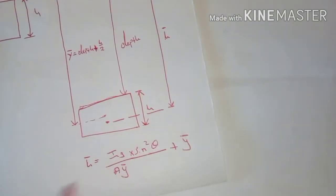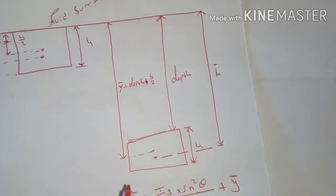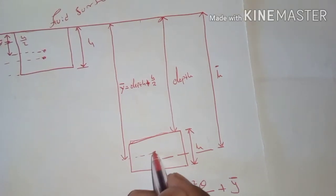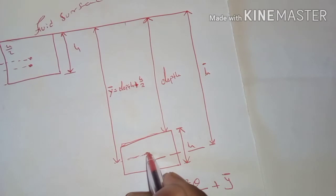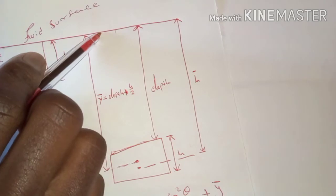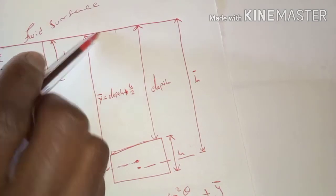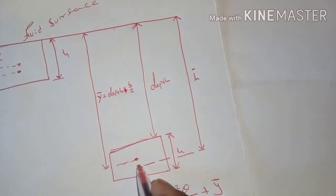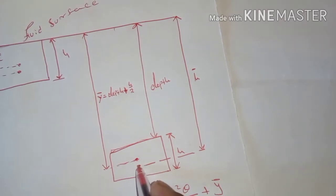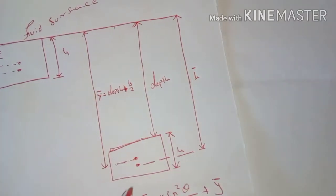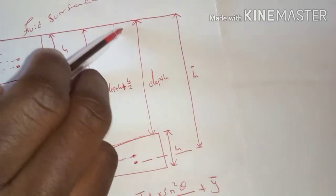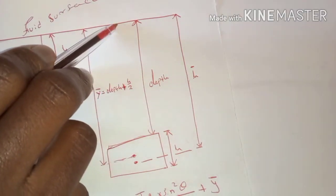When the object is completely underwater, our centroid is located within the object and our h-bar is taken from the centroid to the surface of the fluid or water. The point where the force is acting, which we call the center of pressure, will be at a position below the centroid. Our h-bar is taken from that centroid point to the surface of the water.